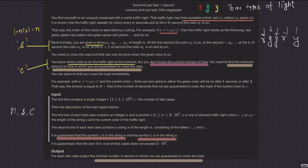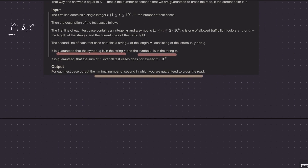The problem is: you know which light is on at the current moment, but you don't know exactly what moment you are at. If you're standing at a red light, you just know you're at a red light — you don't know which red it is. What you want to find is the minimum amount of time in which you are guaranteed to cross the road. You can cross the road once you hit a green light.